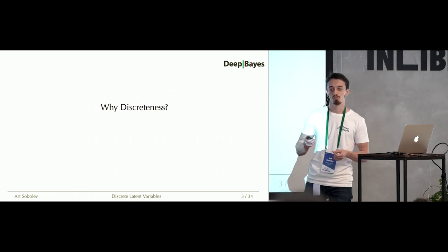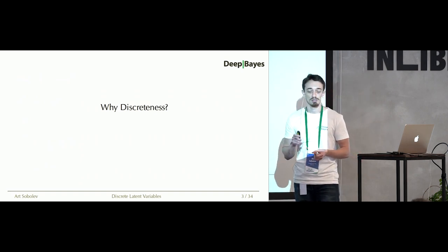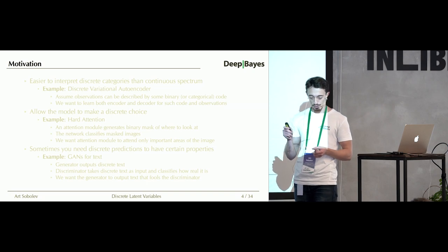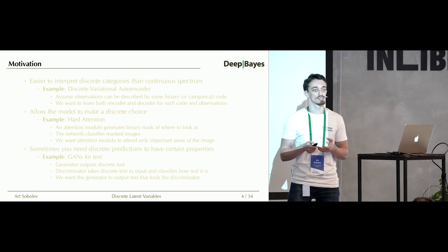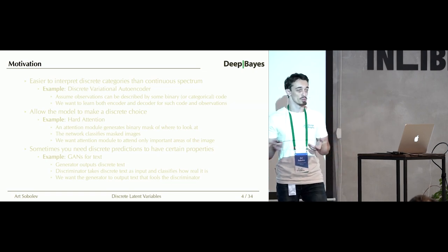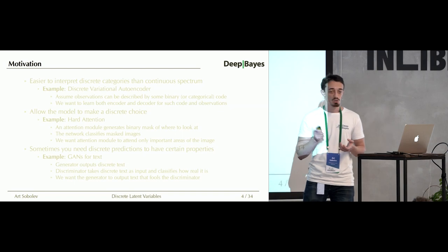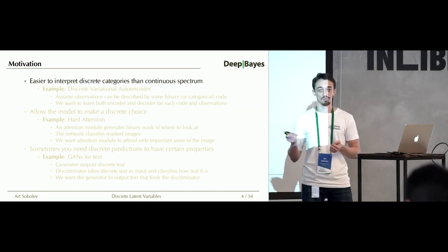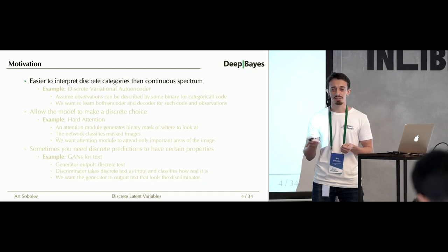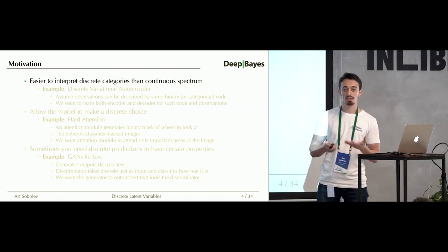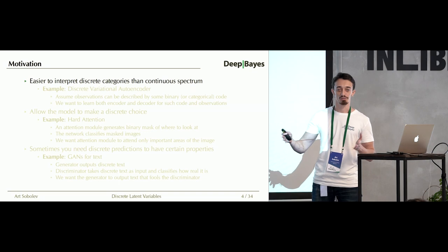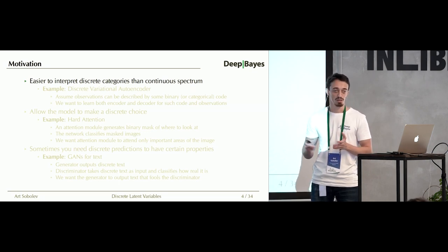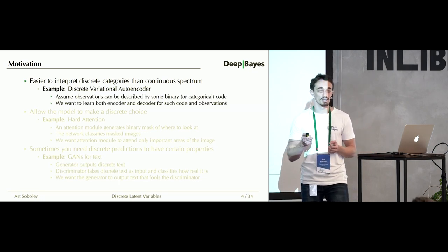So what's the point — why should you care about discreteness? I have thought of several interesting examples, several interesting models that employ discreteness. One distinct feature of discrete latent variables is that they are easier to interpret for us humans. It's way easier to make sense of discrete categories or some discrete number rather than the continuous spectrum of many different values.